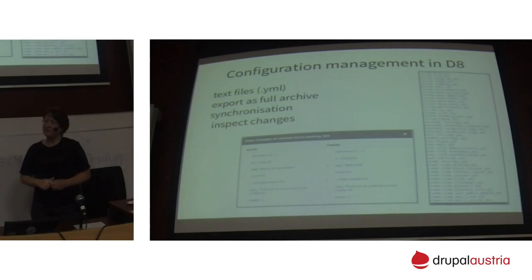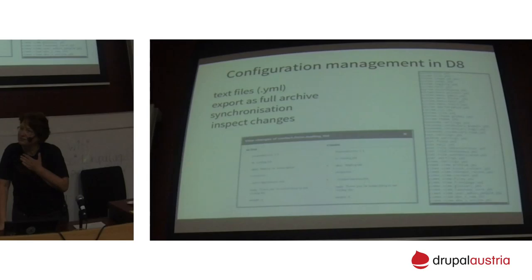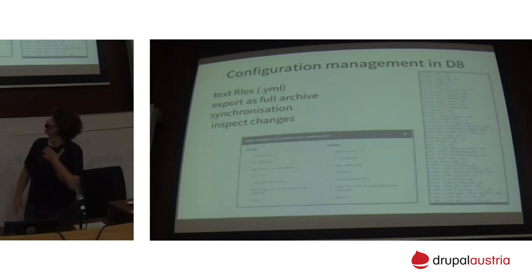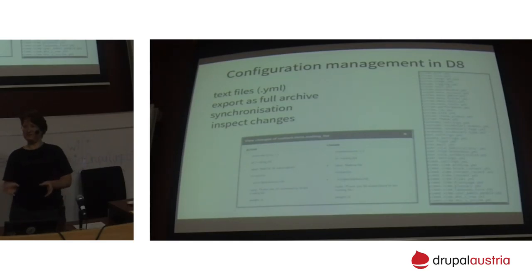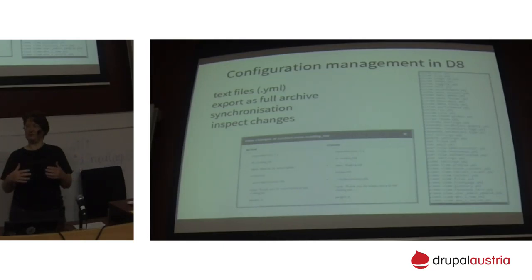Can we choose what goes into these files? Everything goes into those files — every configuration you do goes into individual YAML files. You don't have to choose anymore and risk missing something. For example, if you make a new content type, a new YAML file is made for that content type. And if you delete a content type, it's also removed, so you don't end up with old leftover configuration.